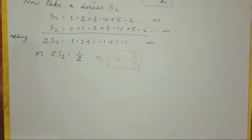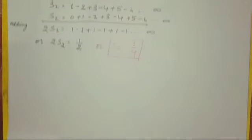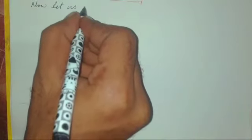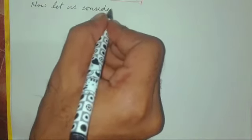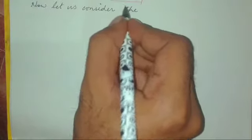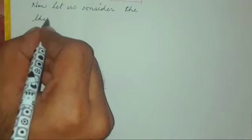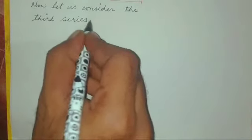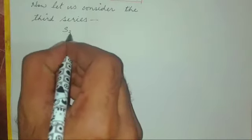Now consider one more series, that is the sum of all natural numbers, S3, which is what we have to prove. So S3 is equal to 1 plus 2 plus 3 plus 4 plus 5 till infinity.